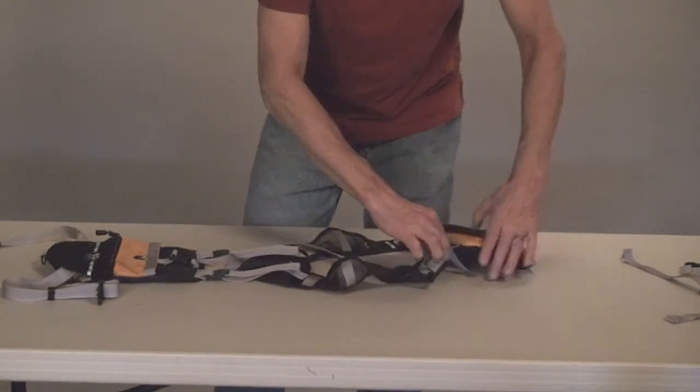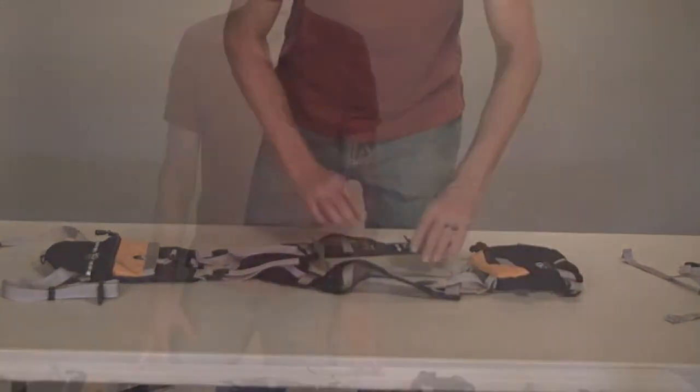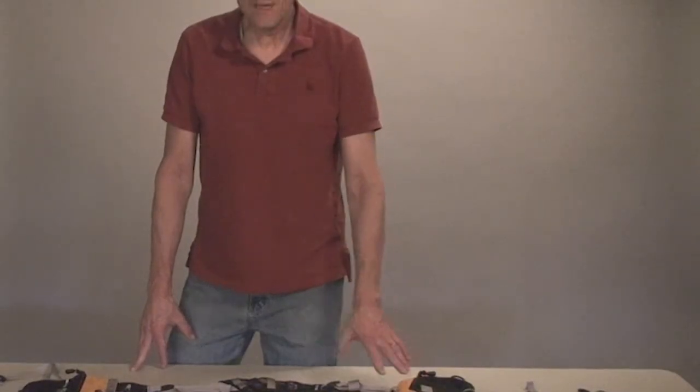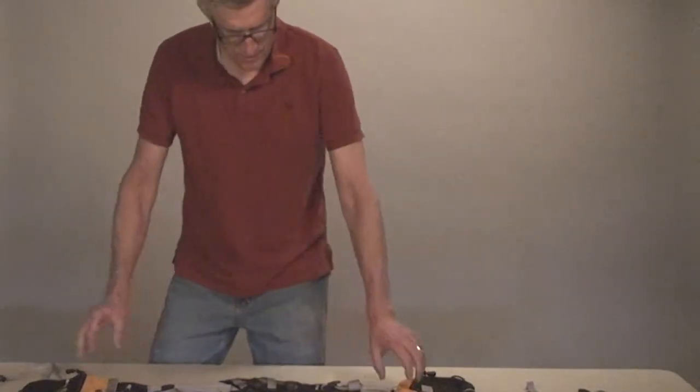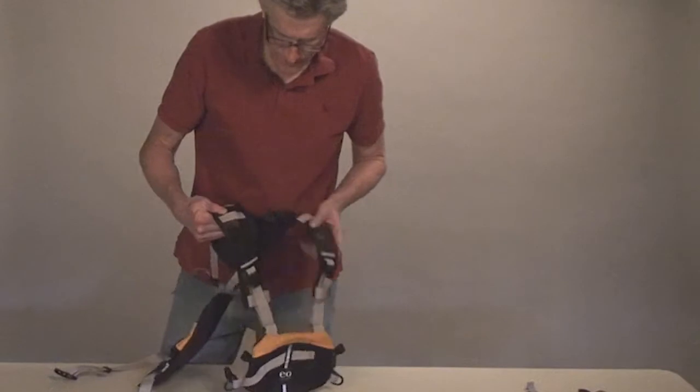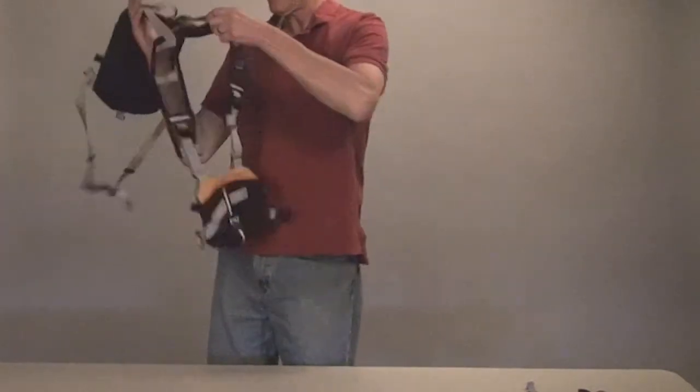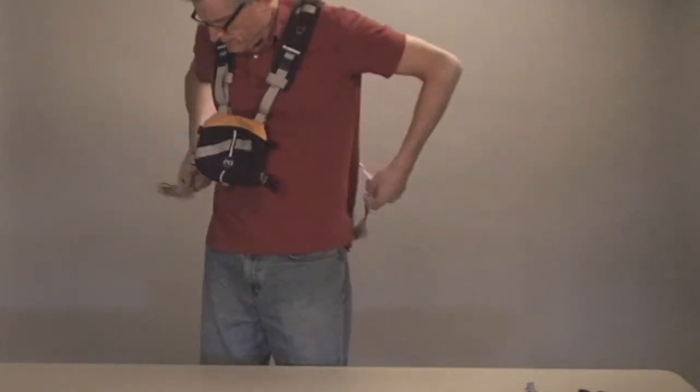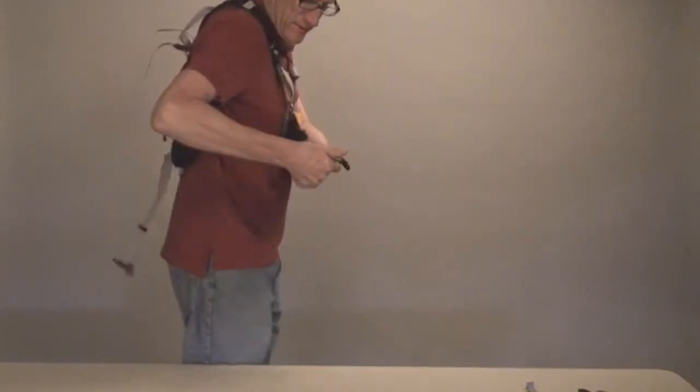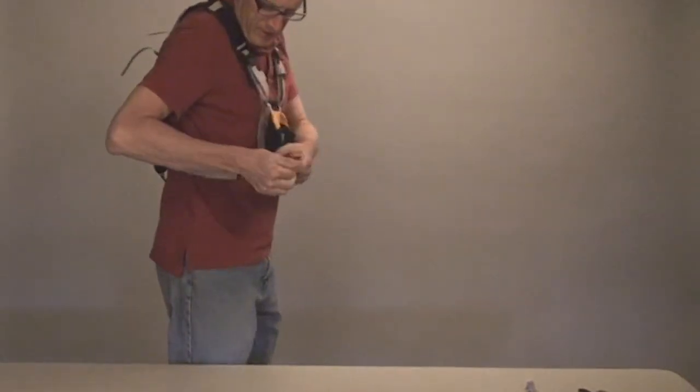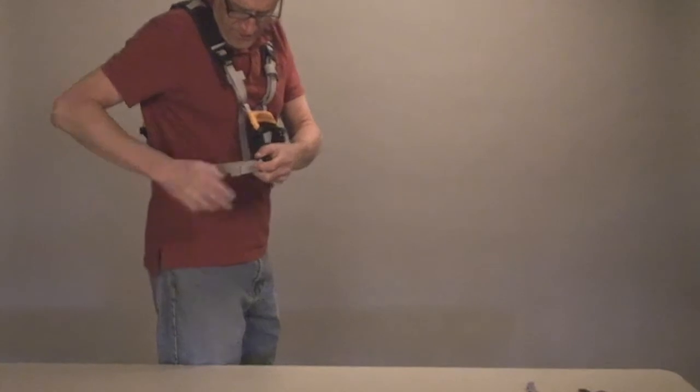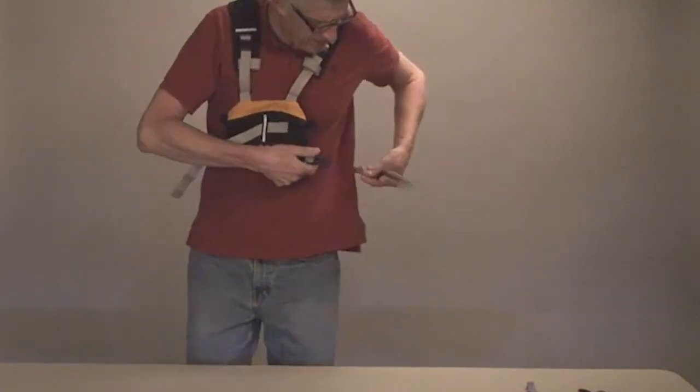When using the chest module with the mesh harness, we have it assembled as you can see like this, and you slip the mesh harness over your head, and then bring the straps from the reservoir module around, they become your waist strap effectively, and tighten down each side.